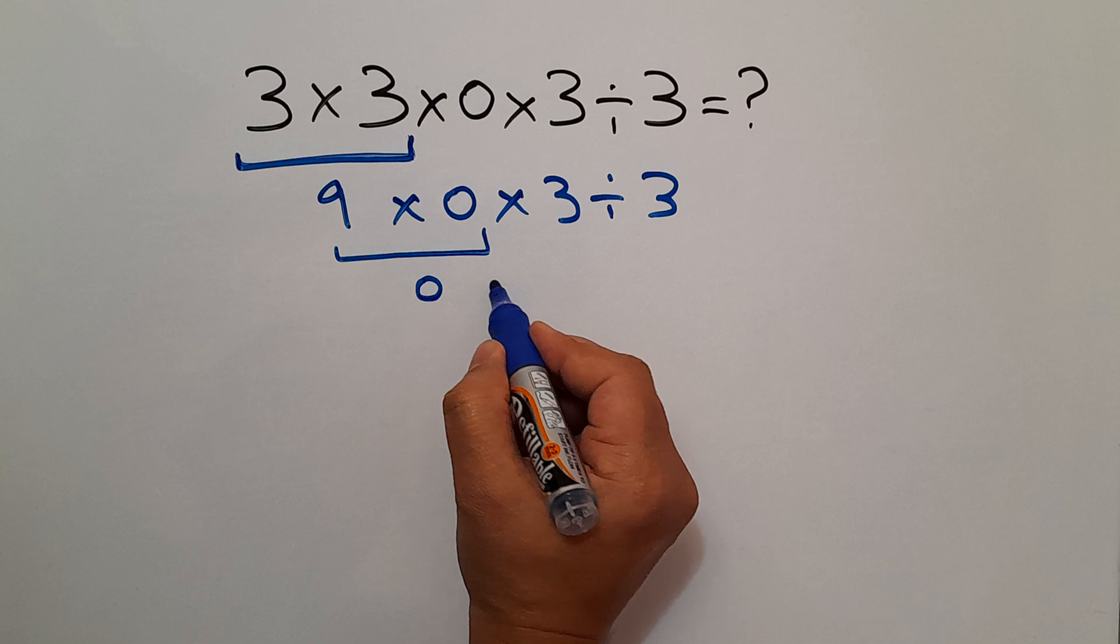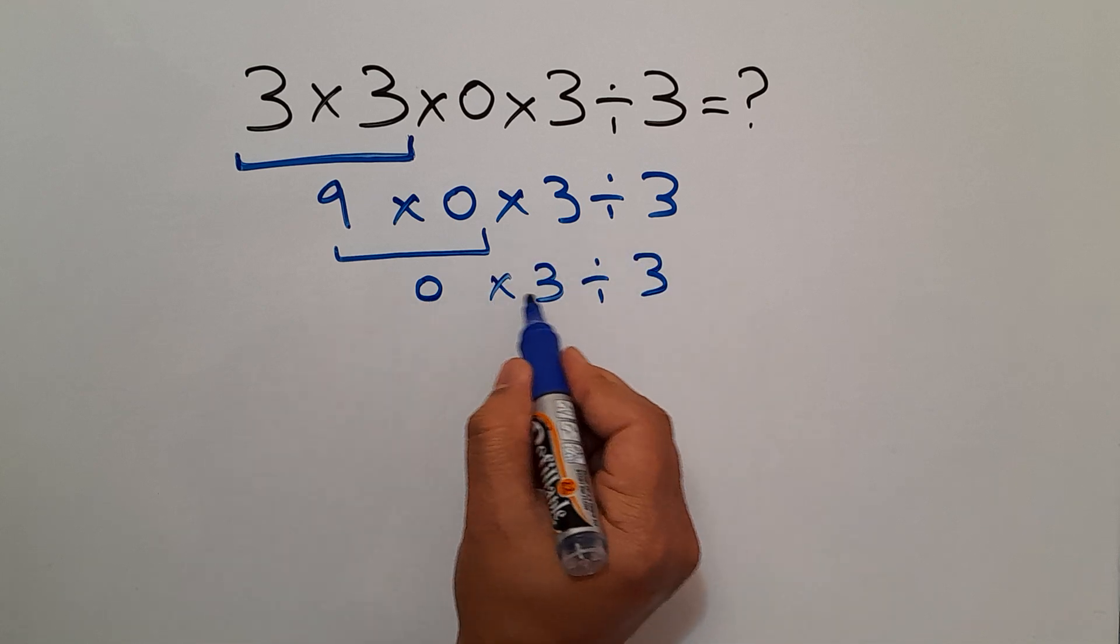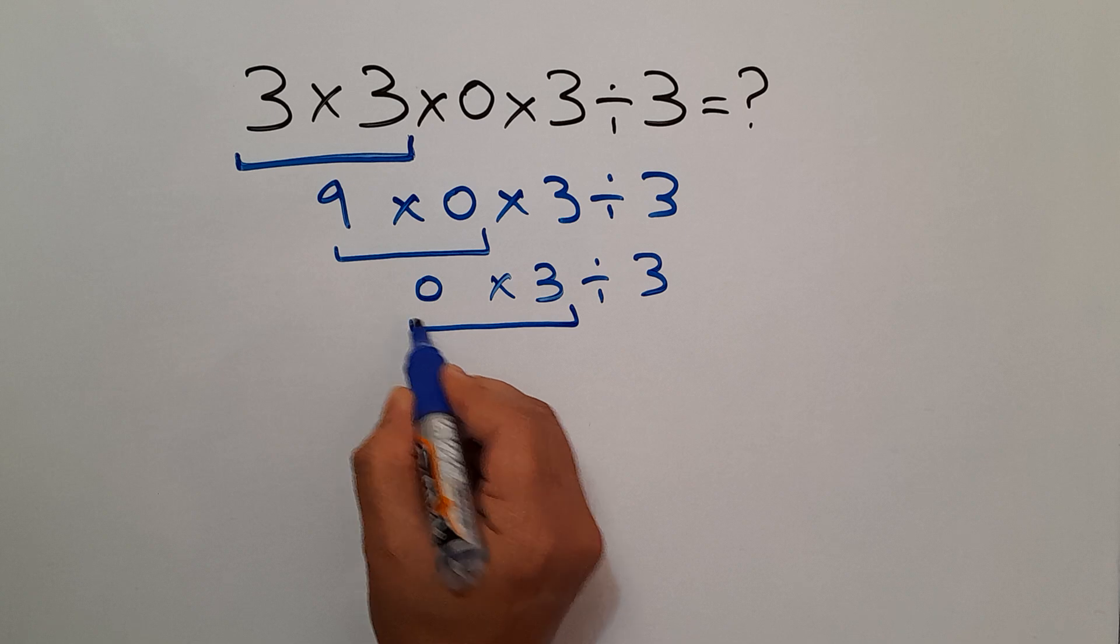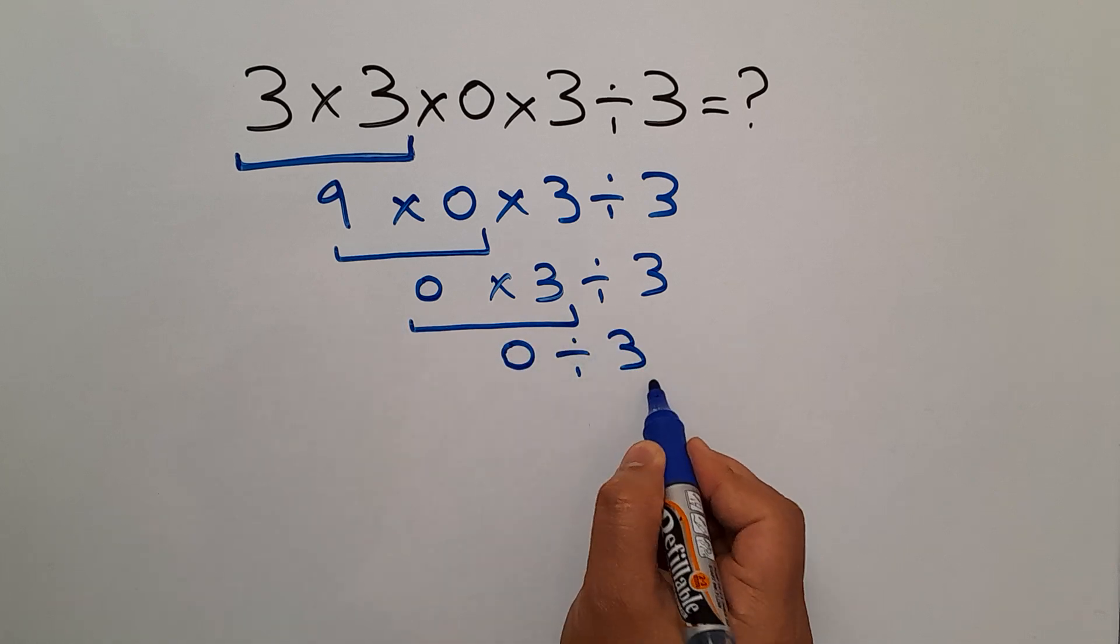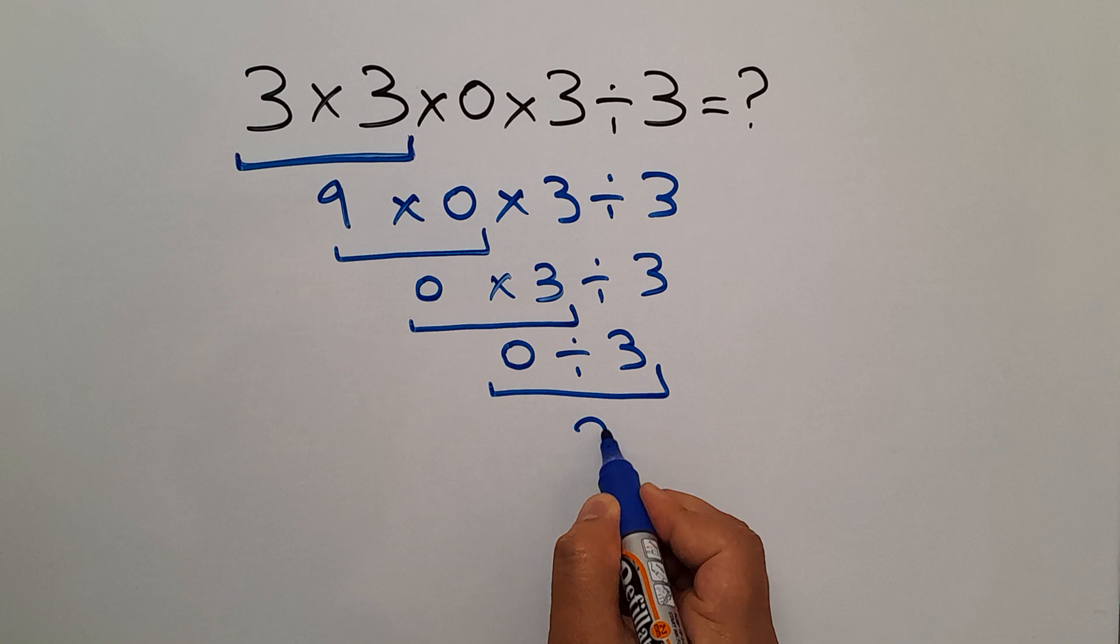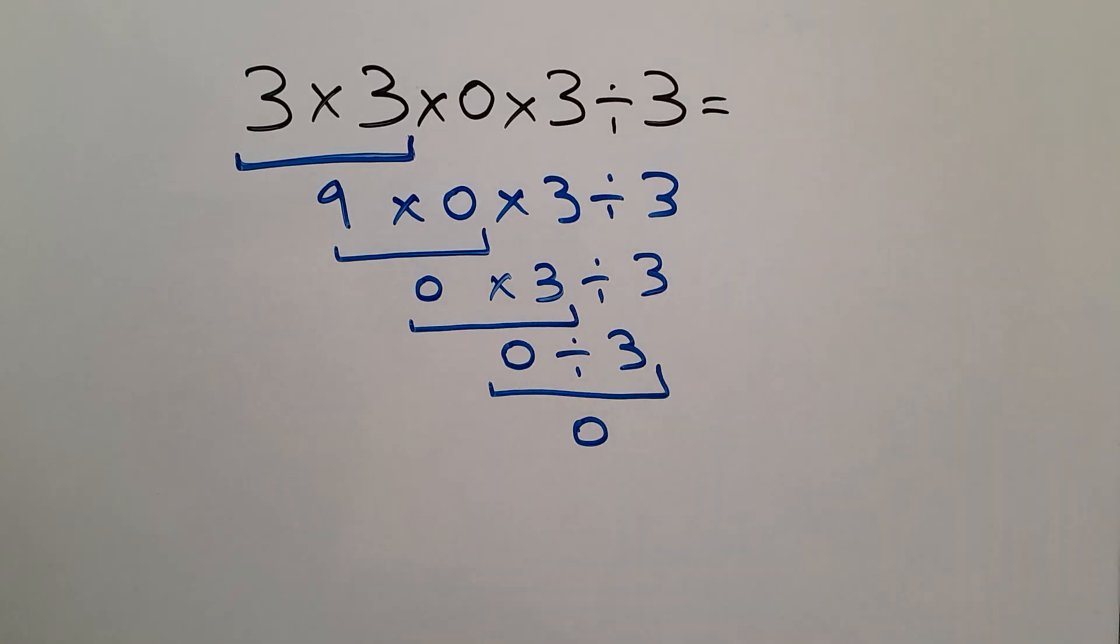0 times any number gives us just 0, and 0 divided by any number is just 0. So our final answer to this problem is just 0.